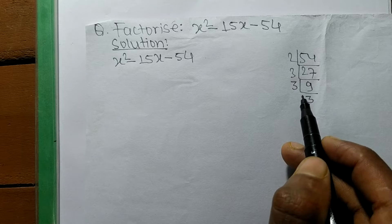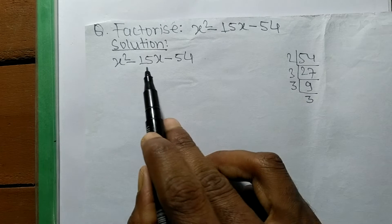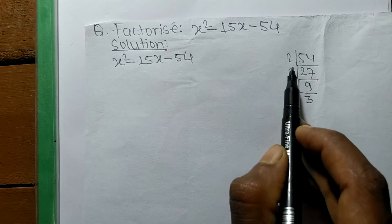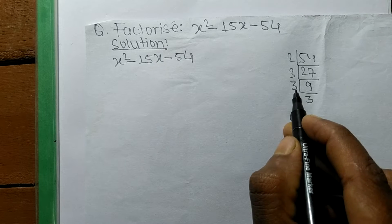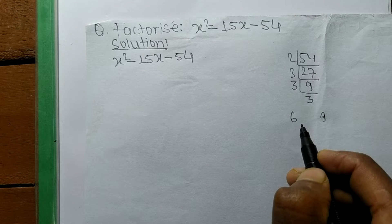From these numbers, we need to find values that when added give -15. If we take 2 times 3 equals 6, and 3 times 3 equals 9, adding gives 15.